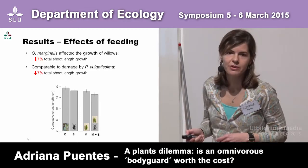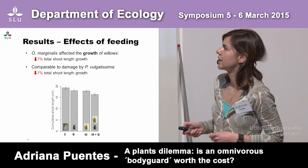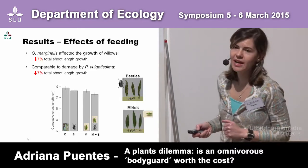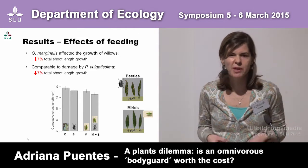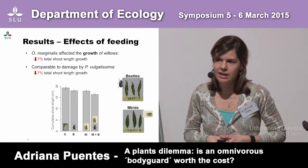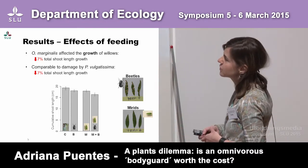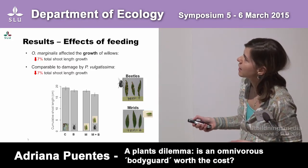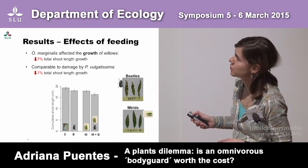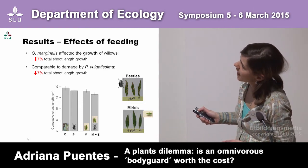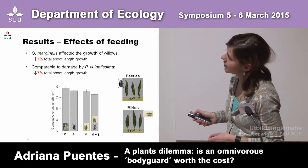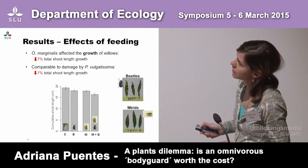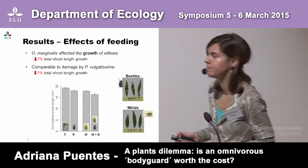Together, the beetles and the myrids were more detrimental to plant growth than either individually, as one would expect. Some of you might wonder whether the beetles actually fed — and yes, they did cause substantial damage. Here are examples of leaves fed upon by the beetles, and these are leaves fed upon by the myrids, leading to these differences in total growth.